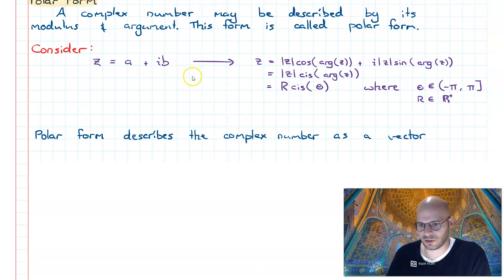Now polar form describes a complex number as a vector, whereby the vector is going to have a distance and direction. The distance being the big R, also known as the magnitude.